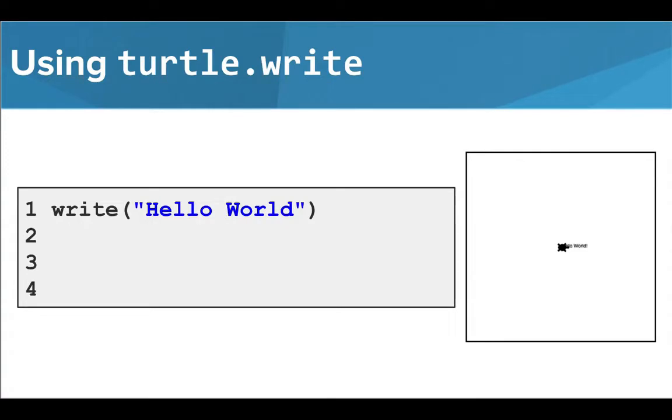So if we called this function with the text hello world, we would see that label appear at Tracy's location on the screen. It does look pretty small though, so let's look at a way we can change the size.